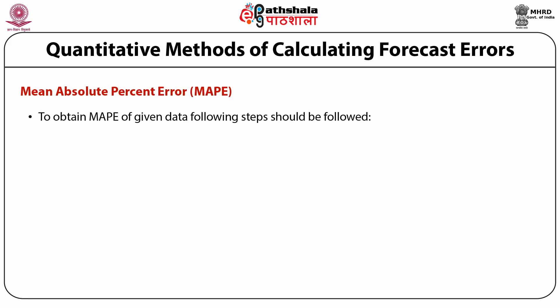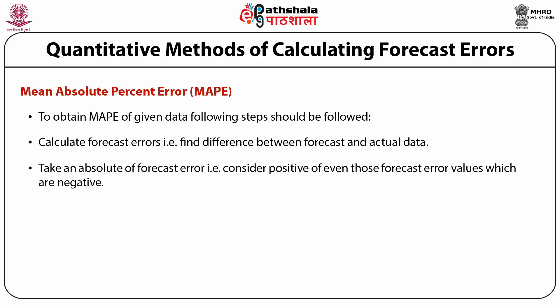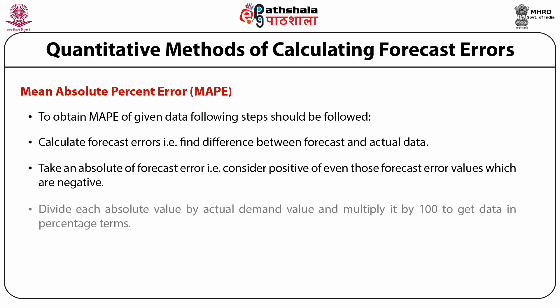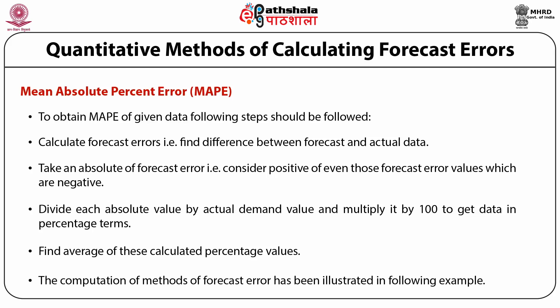Mean Absolute Percentage Error (MAPE): to obtain the mean absolute percentage error of given data, following steps should be followed. Step 1: calculate forecast errors, i.e., find difference between forecast and actual data. Step 2: take the absolute value of forecast error. Step 3: divide each absolute value by the actual demand value and multiply by 100 to get data in percentage terms. Step 4: find the average of these calculated percentage values.